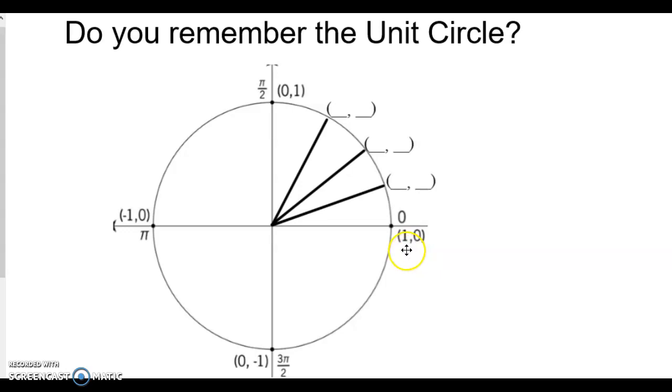Remember that the points go alphabetically, C, S, so it's cosine then sine. If you're looking for the cosine of π, cosine would be your first value. So cosine of π would be negative 1.